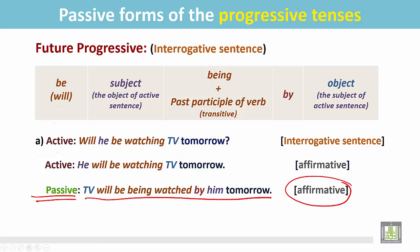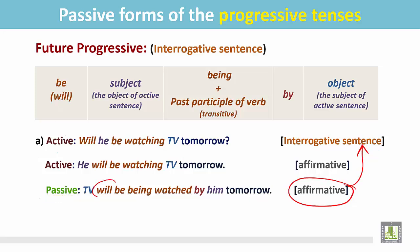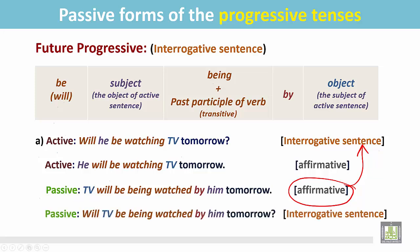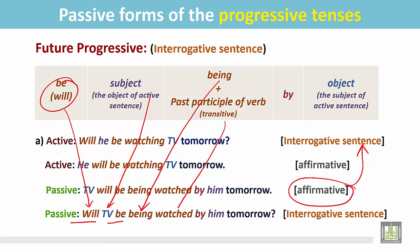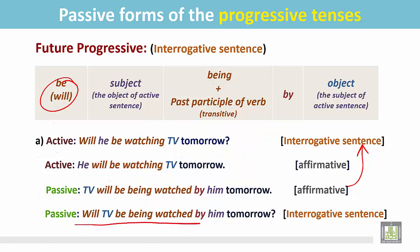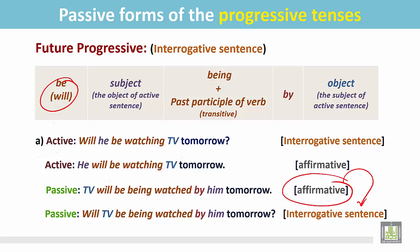The sentence is still in the affirmative form as a statement. To change this statement into an interrogative sentence, we have to place the be verb at the beginning of the sentence, before the subject. The be verb 'will' goes to the beginning, then the subject 'TV': 'Will TV be being watched by him tomorrow?' The affirmative sentence has been changed into an interrogative sentence in the passive.